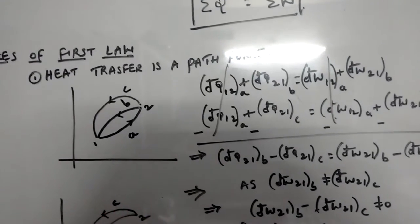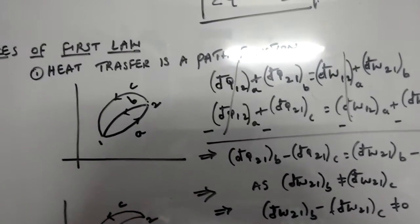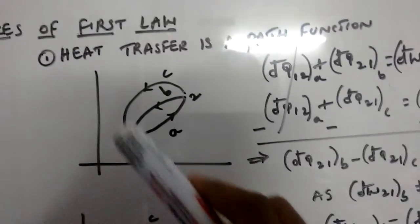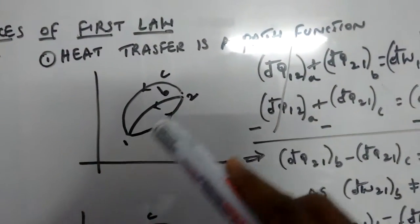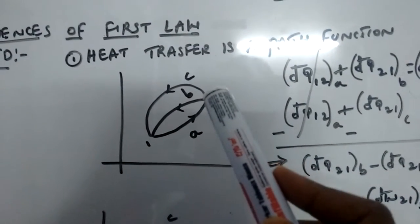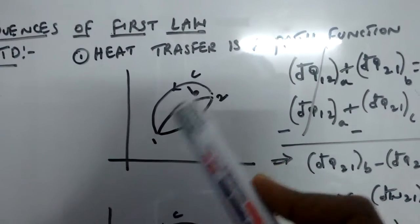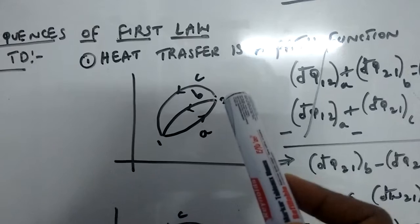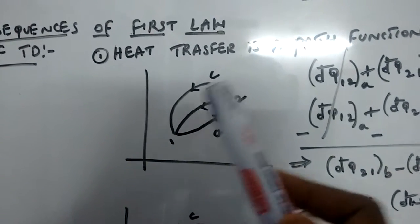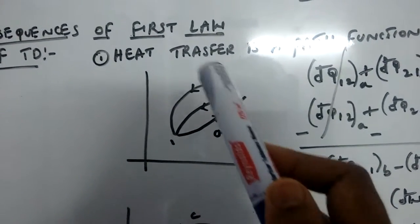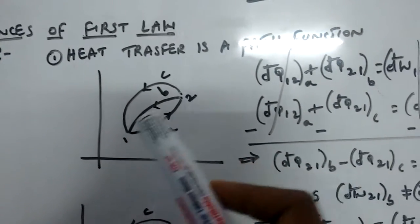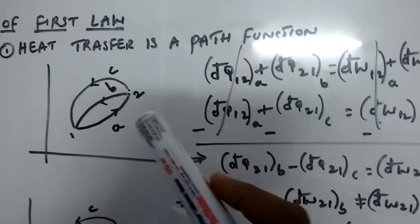Consider a change of state of a process from state 1 to state 2 through path A, and from state 2 back to state 1 through path B, and also through path C. Now apply the first law of thermodynamics to these processes.